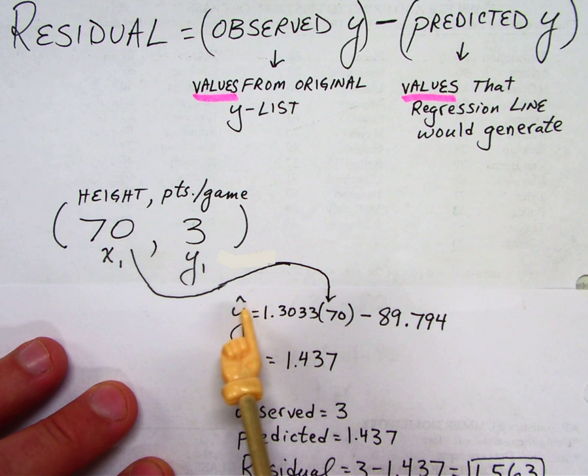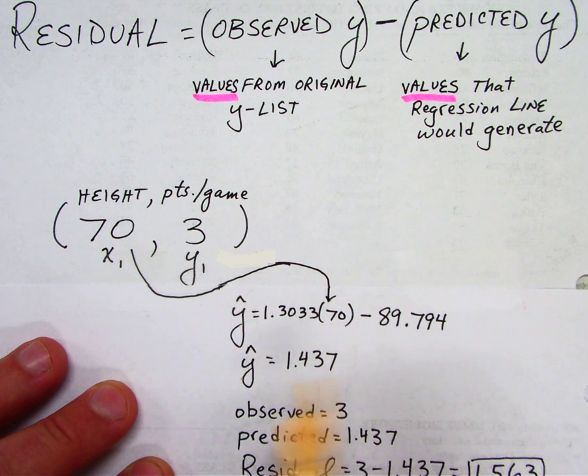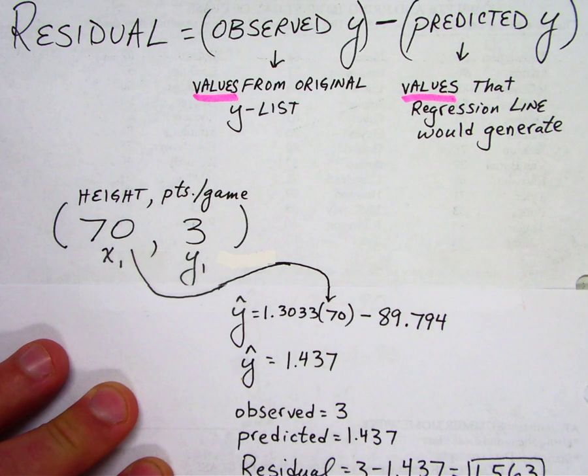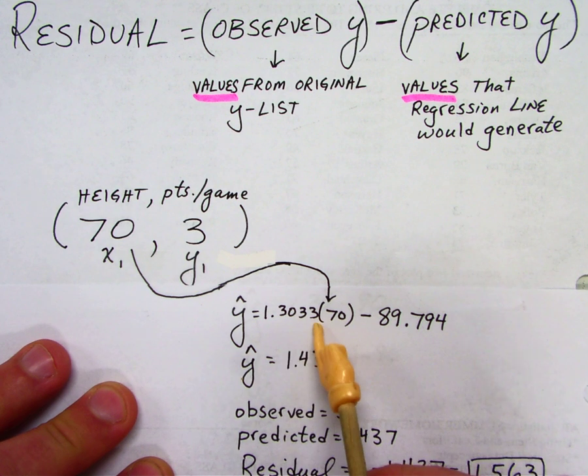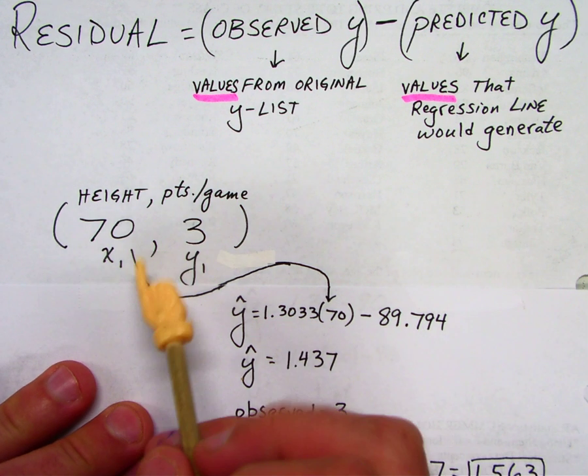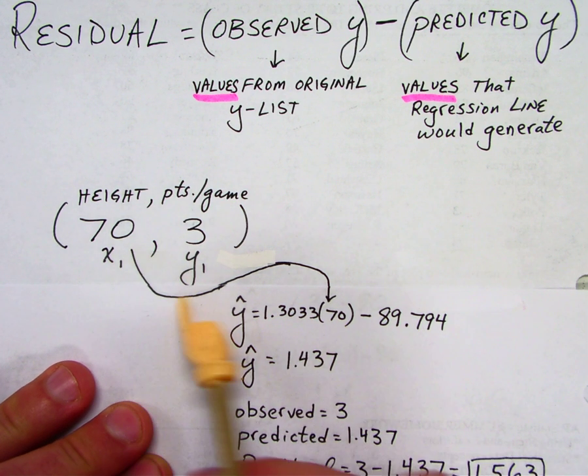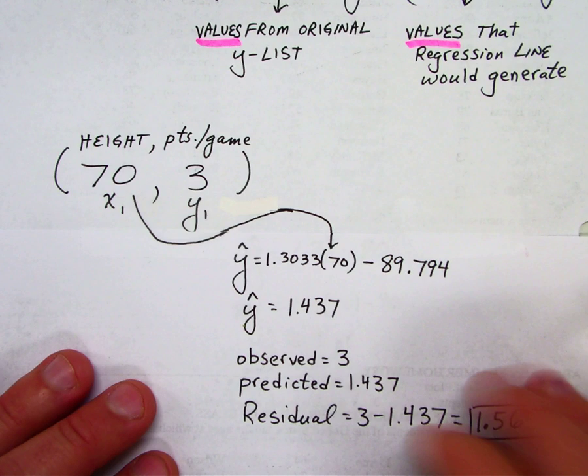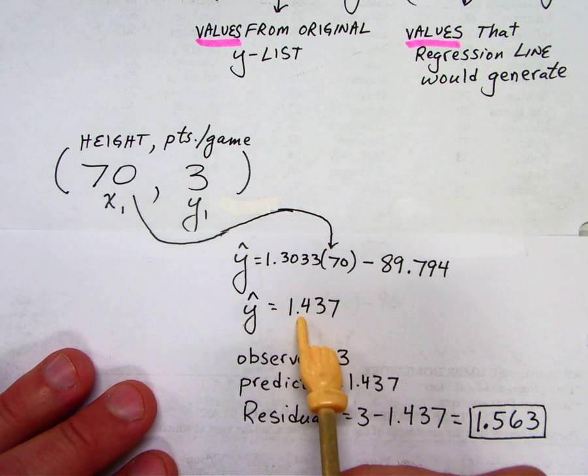So some textbooks use this little hat here. We call it y hat, which is the regression line. Notice this is my regression line. I rounded it off here. Your calculator, when we put it in here, carried it to like the 10 billionth digit here, but for ease here, I just went out to four digit places. If I take my original x value and I plop it into my line of best fit, it spits out this value here.